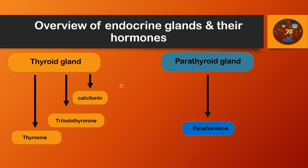Next we discuss the thyroid gland, which produces three hormones: thyroxine, triiodothyronine, and calcitonin. Thyroxine and triiodothyronine increase the rate of chemical reactions in almost all cells of the body, thus increasing the general level of body metabolism. Calcitonin promotes the deposition of calcium in the bones, thereby decreasing calcium concentration in the extracellular fluid — meaning the bones are built up of calcium deposited by calcitonin.